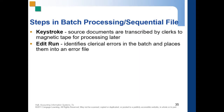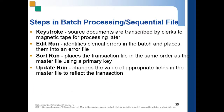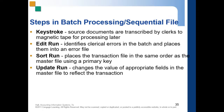In keystroke input, source documents are transcribed by clerks to magnetic tape for processing later. To recap: the edit run identifies errors, the sort run arranges transactions in the same sequence as the master file, and the update run changes the values of the appropriate fields in the master file to reflect the transaction. The backup procedure means the original master file continues to exist and a new master file is created.